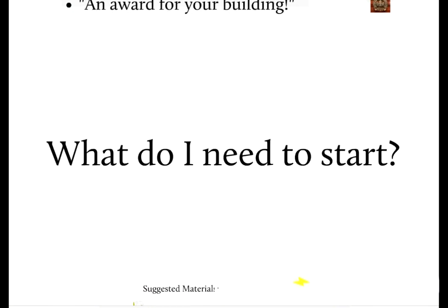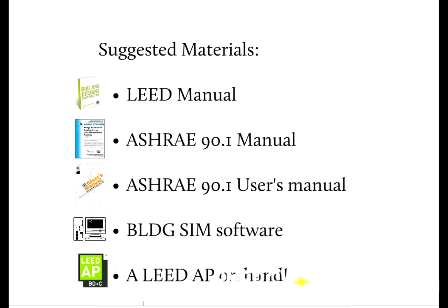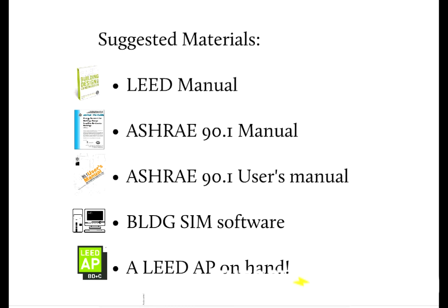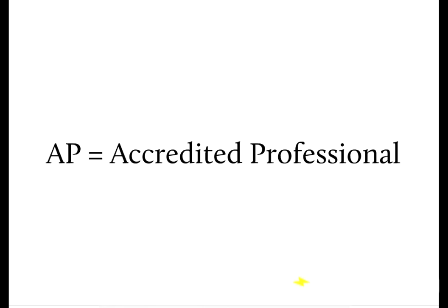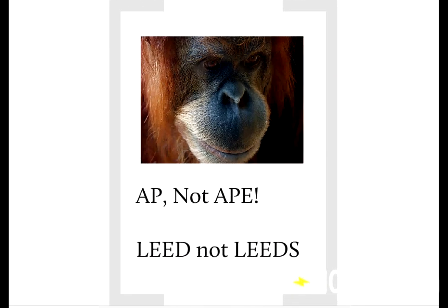Before we start, we need to ask ourselves: what do we need to get started? Here are some materials you need before you can expect to have any success as an energy modeler. You will need a LEED manual, and even more than the LEED manual, you will need an ASHRAE 90.1 manual as well as the user's manual. Of course, you need building simulation software. And finally, I would recommend that you are either a LEED AP, or you have one nearby. Remember, the AP stands for Accredited Professional. People get accredited and buildings get certified. And while we're at it, it is AP and not APE, and it's LEED and not LEEDS. Not that I wish to offend anyone, but I think you would rather hear it from me than from a client.